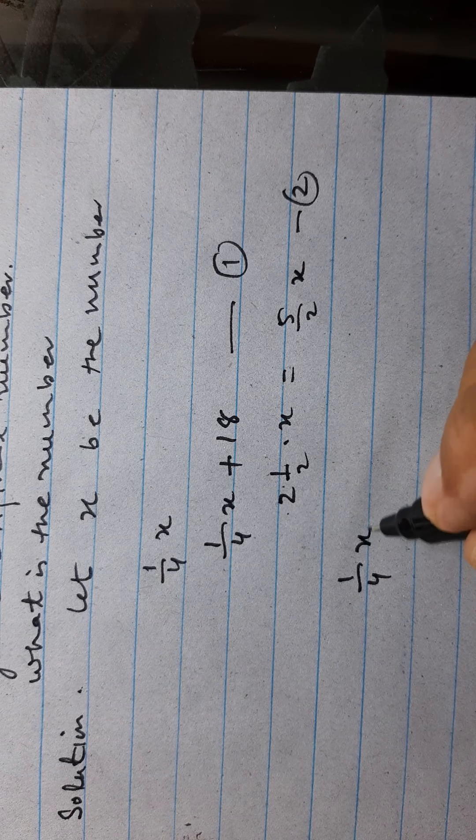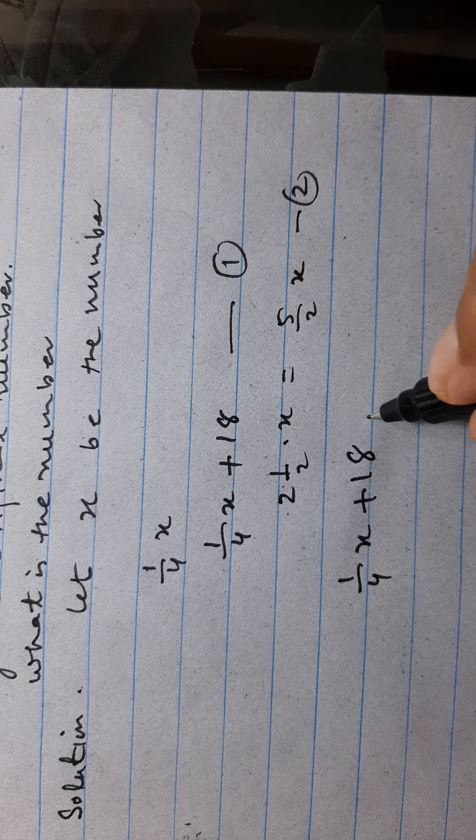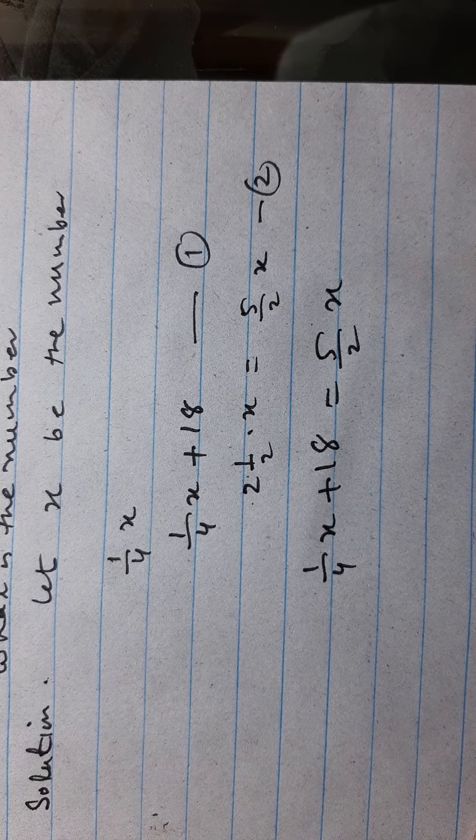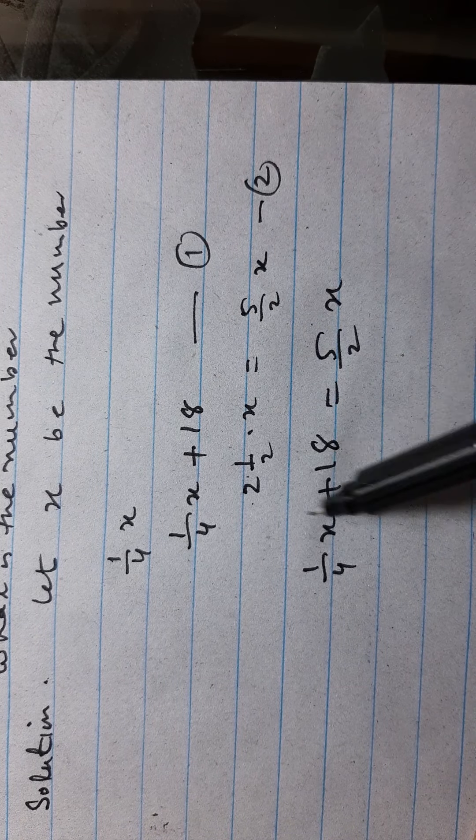Therefore, this is equation number one and this is equation number two, and both are equal. Therefore, we can write one over four x plus 18 is equal to five over two x.